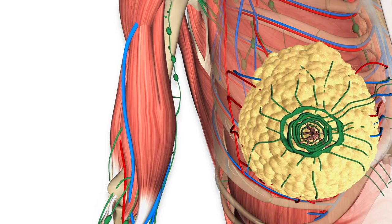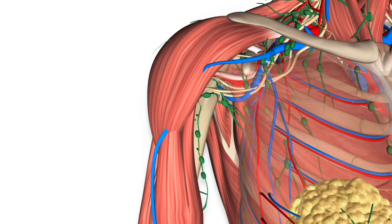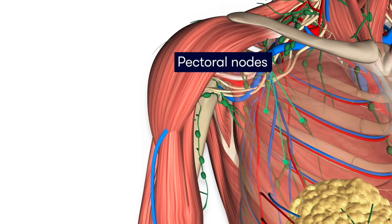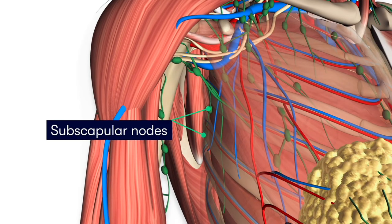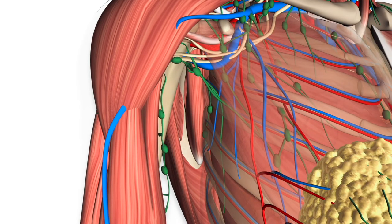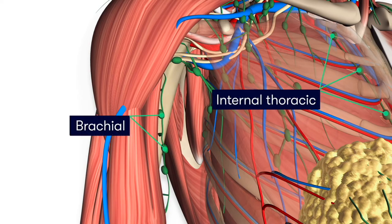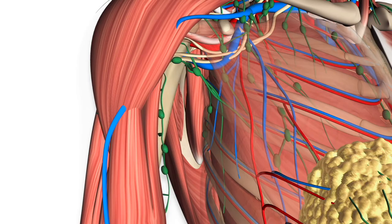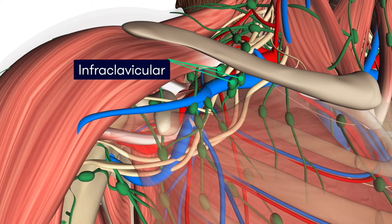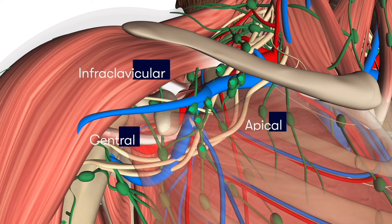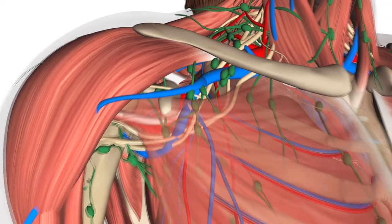Moving on to the lymphatic drainage of the breast, as we can see, this is relatively extensive and involves anterior drainage by the pectoral nodes, and posterior drainage via the subscapular nodes. Lateral and medial lymphatic drainage is via the brachial and the internal thoracic nodes, respectively. In addition to these, the breast is also drained via the infraclavicular, the central, and the apical nodes. So you can definitely appreciate that the lymphatic network for each breast is really extensive.